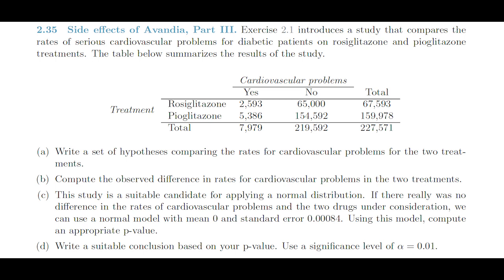B then says: compute the observed difference in rates for cardiovascular problems in the two treatments. C then says: this study is a suitable candidate for applying a normal distribution. If there really was no difference in the rates of cardiovascular problems and the two drugs under consideration, we can use a normal model with mean 0 and standard error 0.00084. Using this model, compute an appropriate p-value. And then finally, write a suitable conclusion based on your p-value. Use a significance level of alpha equals 0.01.